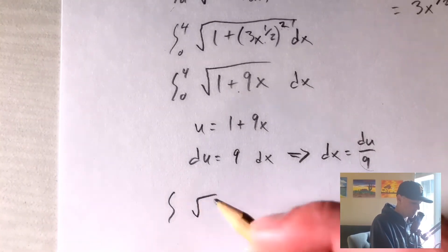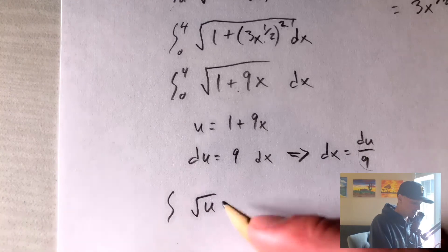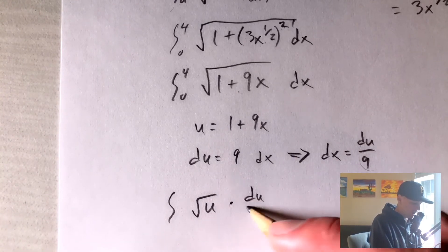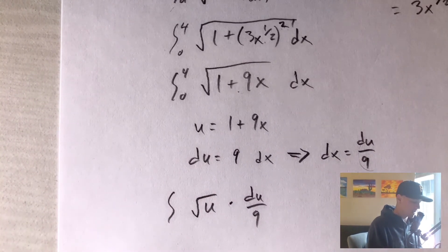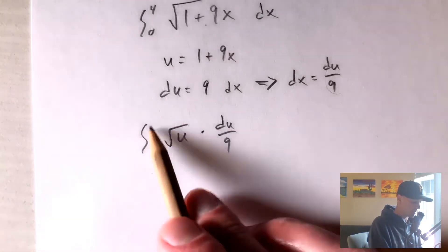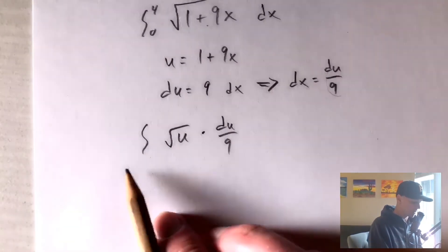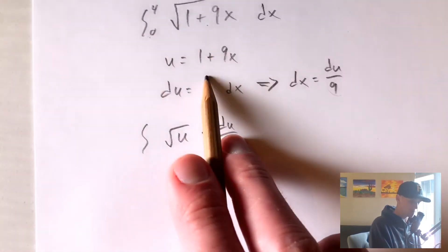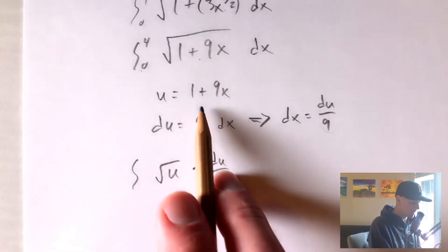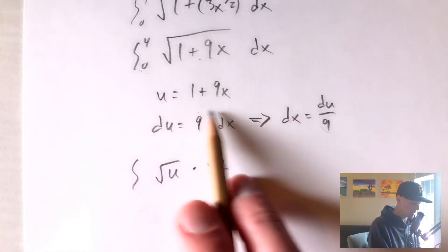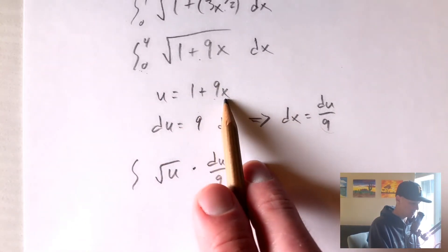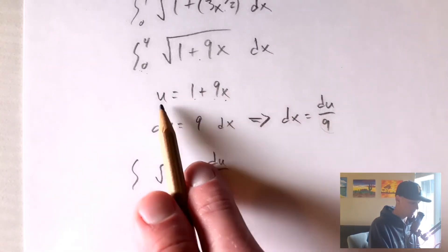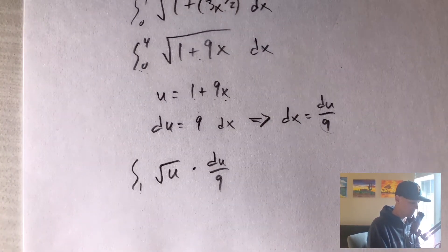So we'd get the square root of u times du over 9. So the other thing we want to keep in mind is we need to adjust the bounds of our integral here. So adjusting the bounds basically just means plugging in these x values into our u that we came up with. So plugging in 0 here is going to give us 9 times 0, which is 0, plus 1 is 1.